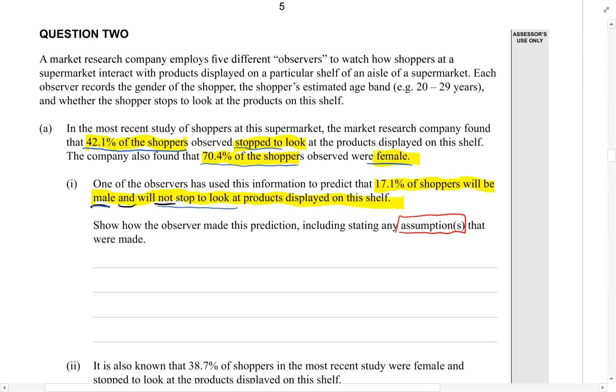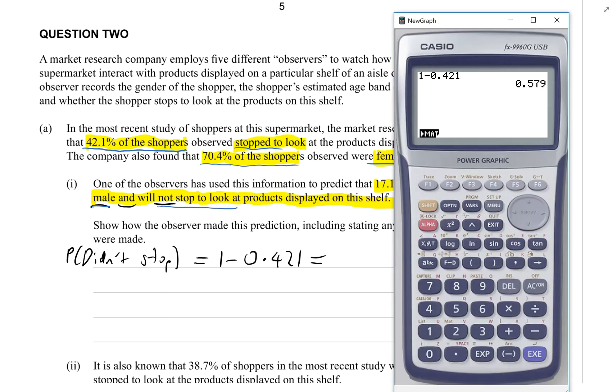If 42.1% of the shoppers stopped to look, what percent didn't stop to look? Well it must be the rest. So 1 minus 0.421 equals 0.579.